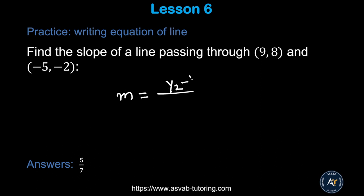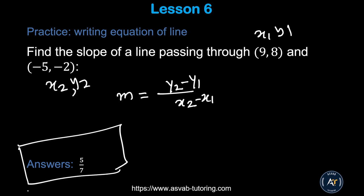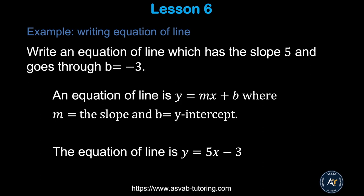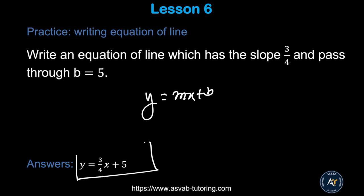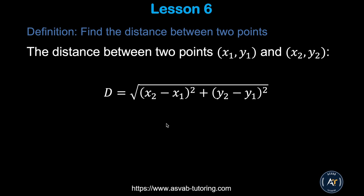Now we'll learn how to write the equation of a line using slope and y-intercept. Using y = mx + b, if slope m = 5 and b = −3, that gives y = 5x − 3. Try the next problem yourself: plug in the values and make sure you get y = (3/4)x + 5.